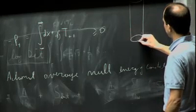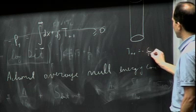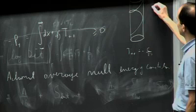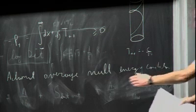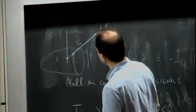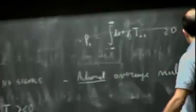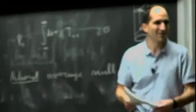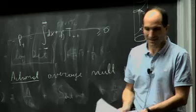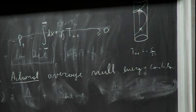We can give an example where the pointwise NEC fails: consider a cylinder, where the Casimir energy is negative. We computed that T_{++} = -c/24, so if you integrate it along a null line around the cylinder you get something negative. But that null line is not achronal — you can find two points on it that are timelike separated. For achronal null lines, the ANEC seems to be true in quantum field theories; no one has found a counterexample. You can find proofs in theories with holographic duals. If you assume this condition, then you don't have traversable wormholes — no science fiction wormholes.